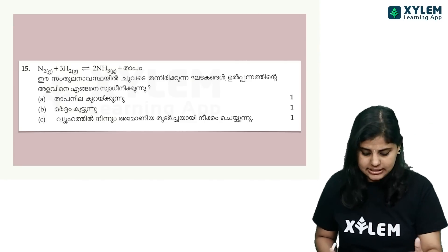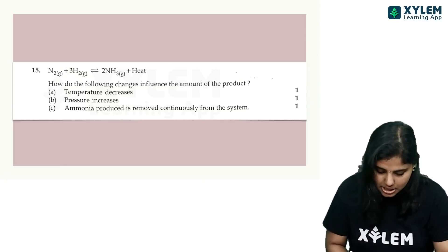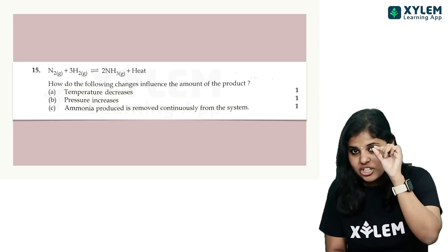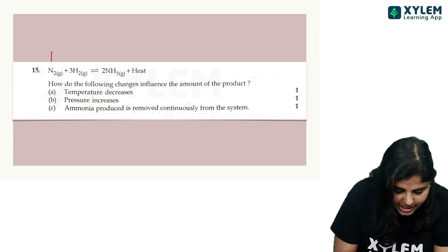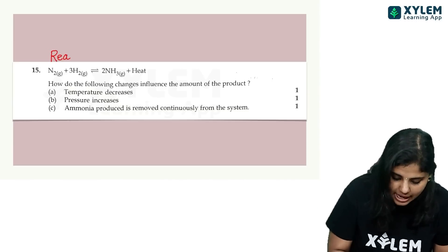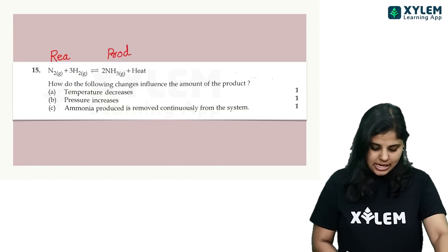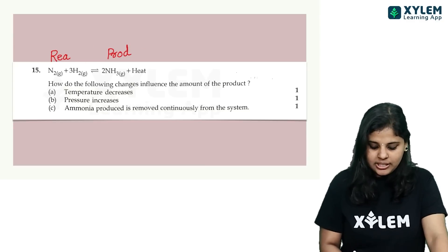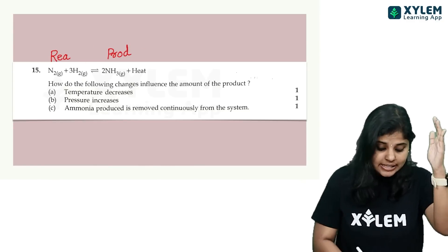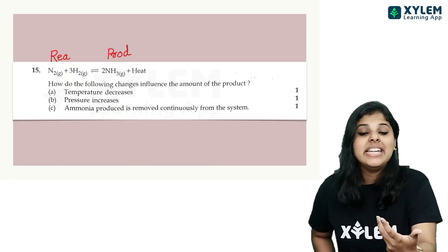What is the reaction to heat? This is the forward reaction and backward reaction. The reactants are on the left side of the arrow and the products are on the right side. In this reaction, the heat will produce ammonia. If you combine nitrogen and hydrogen, ammonia will be produced with heat.